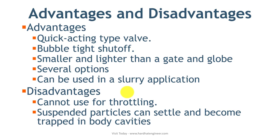Here you can see the advantages and disadvantages of using a ball valve. The ball valve is a quick-acting valve that offers bubble-tight shutoff. It is smaller and lighter than a gate and globe valve of the same size. Several multiport design options offer flexibility to choose the best valve for your service. The ball valve can also be used in slurry applications. On the disadvantage side, the ball valve is not designed for throttling — regular throttling can damage the disc. If there is a problem with the seat, suspended particles can settle and become trapped in the body cavities, causing wear, leakage, or valve failure.